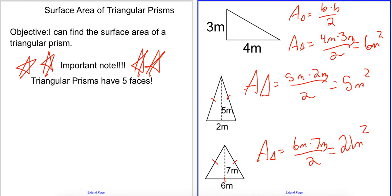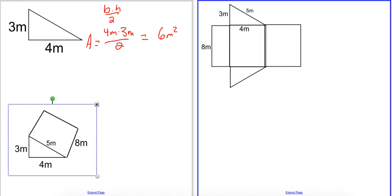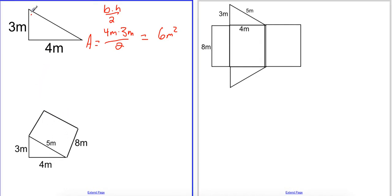Now we're going to look at our first figure. Surface area is the space all around the shape, unlike regular area which is the space inside the shape. If I take this triangular prism and fold it out, you can see what I'm looking for — the area of all of these individual pieces.